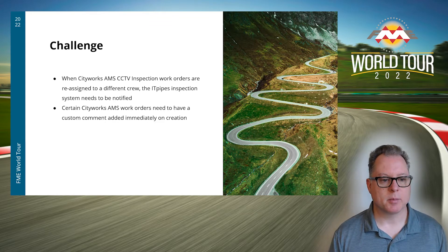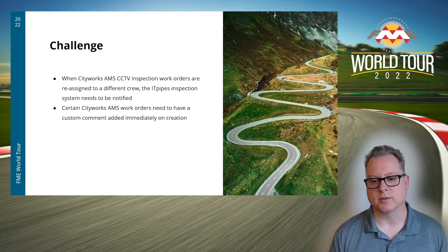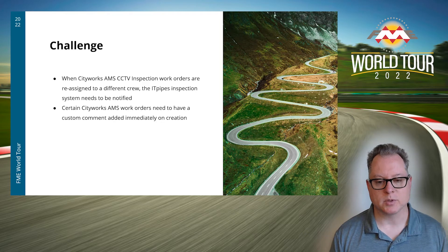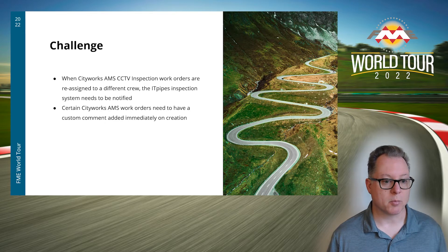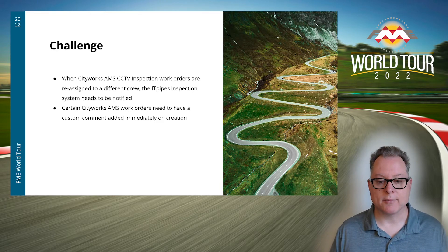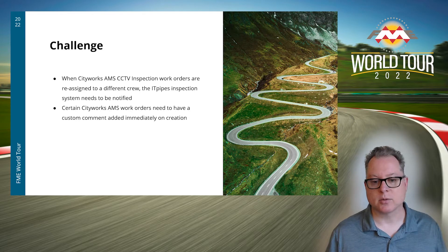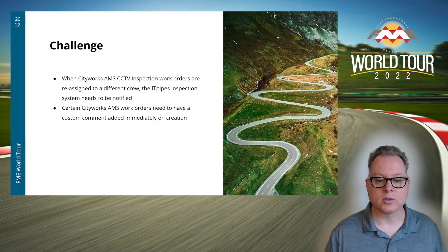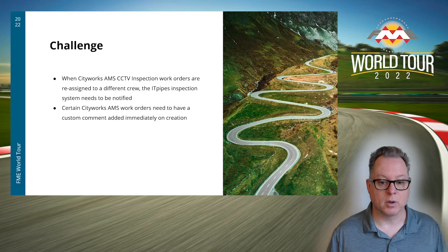This all came about for us at CentralSAN because we had a couple of real-world problems to solve with our own enterprise systems. We use CityWorks Asset Management System, which is a GIS-centric asset management and work management system. We have CCTV inspection work orders that are created to inspect our pipes, and they're often assigned to one crew but later reassigned to another crew, and we needed a way to let IT pipes — another system — know that the inspector had changed. A second situation was that for certain work order types, we needed to inject a custom comment into the work order containing a hyperlink to another application that allowed our field workers to access maintenance history, related documents and manuals, and spare parts availability for the asset they were required to work on.